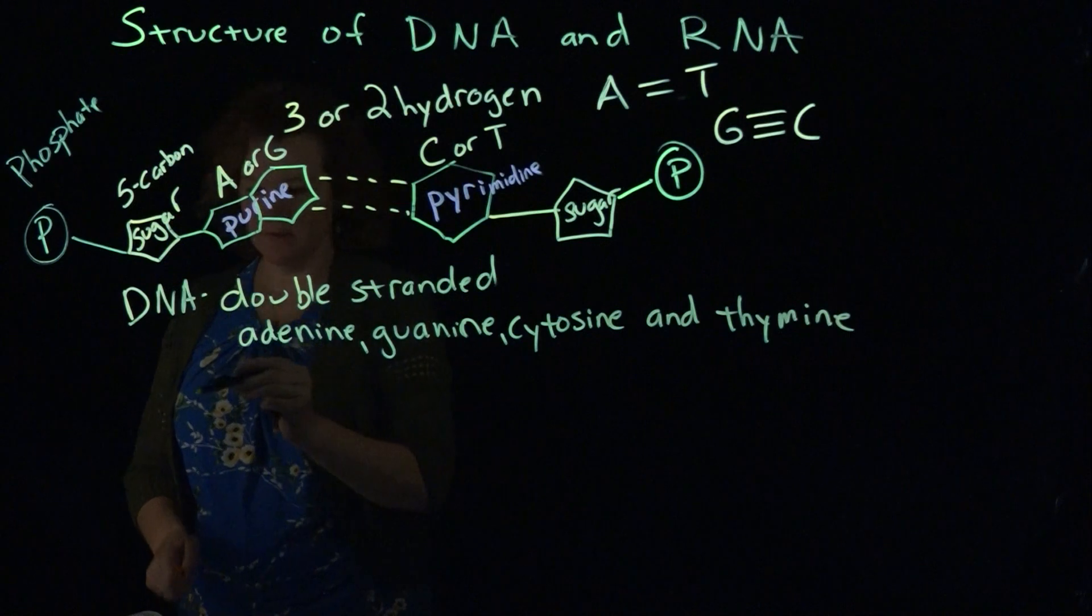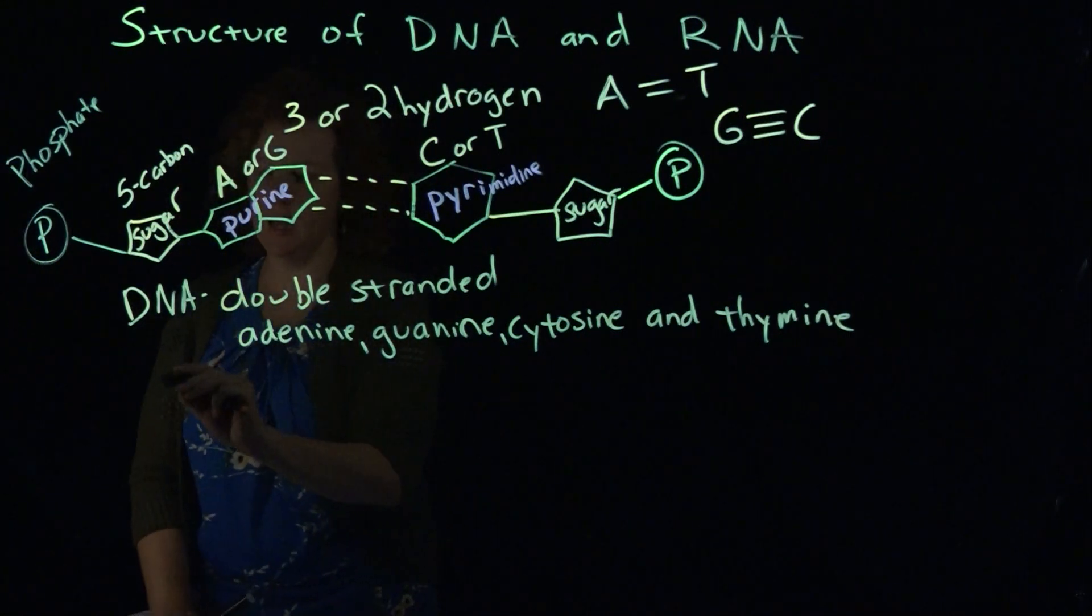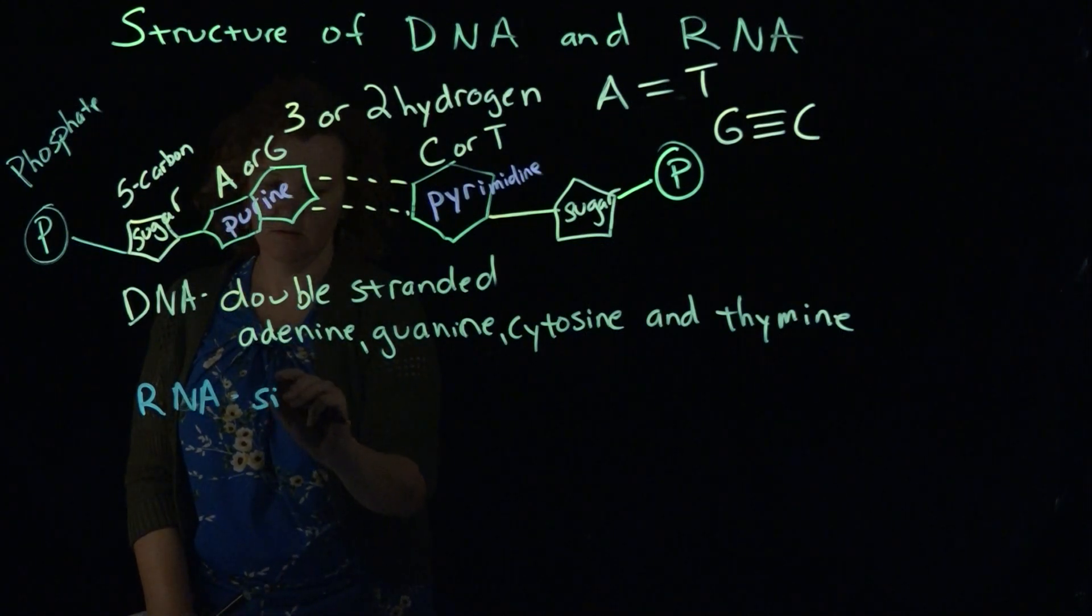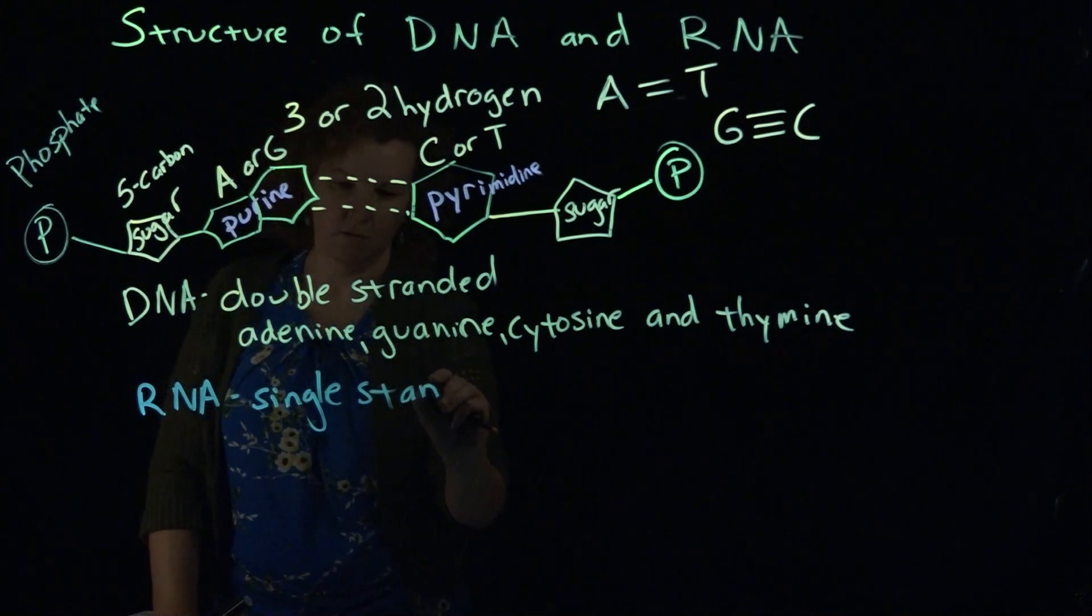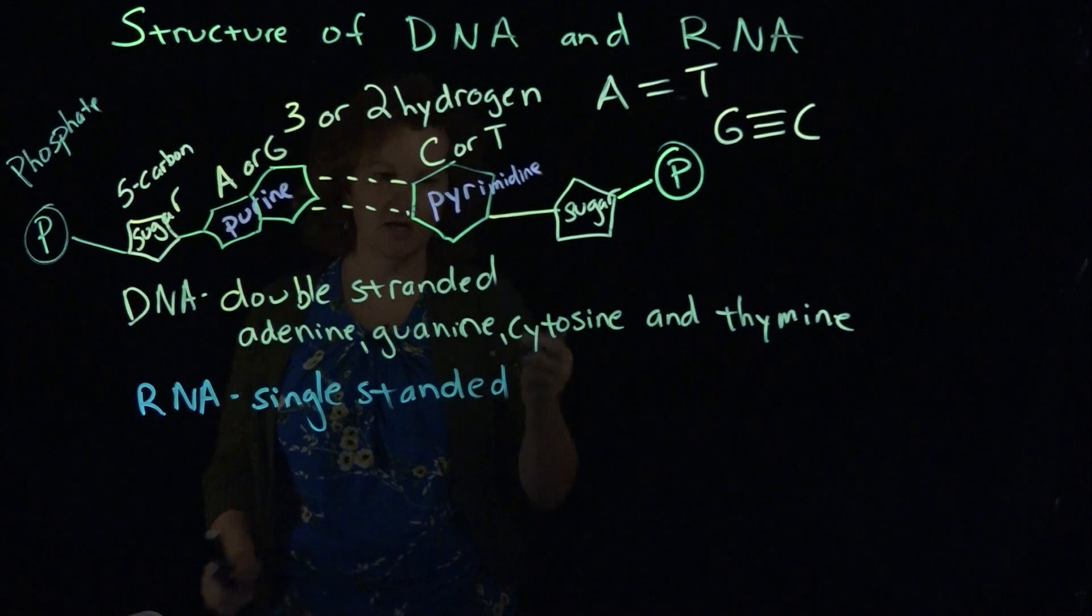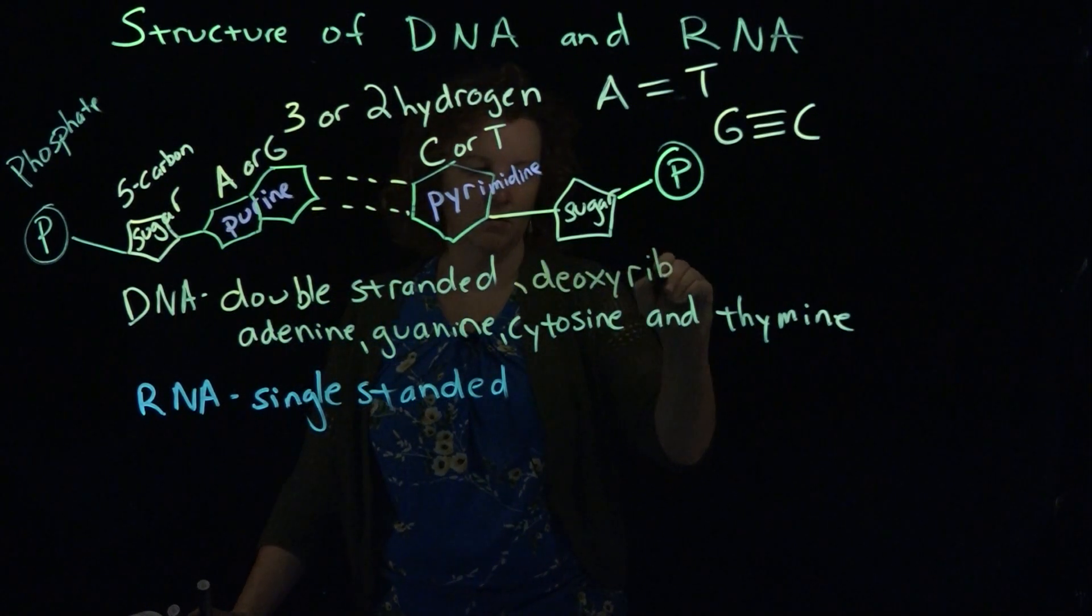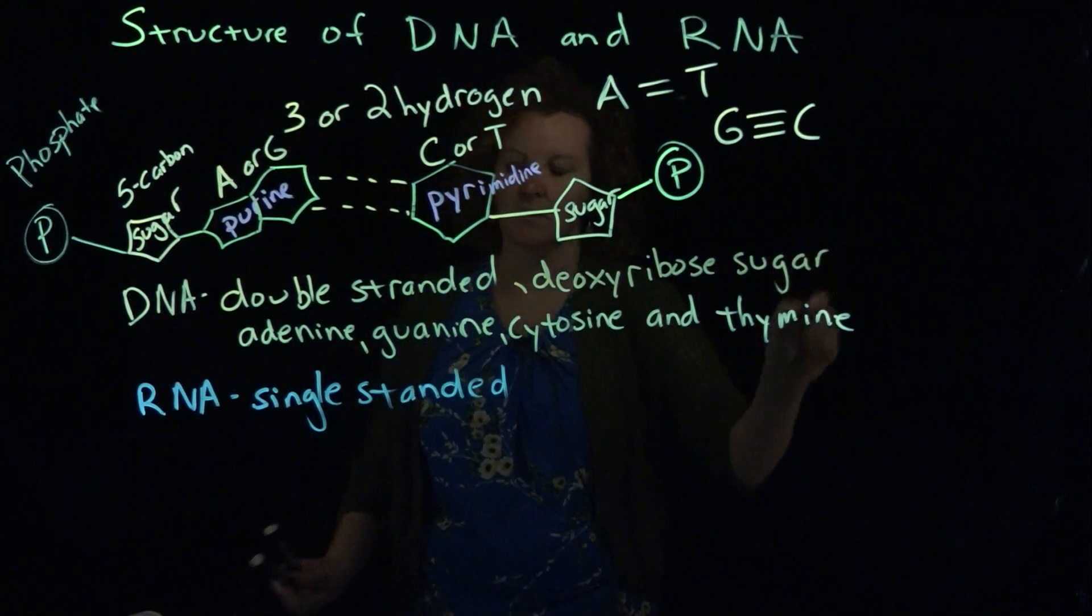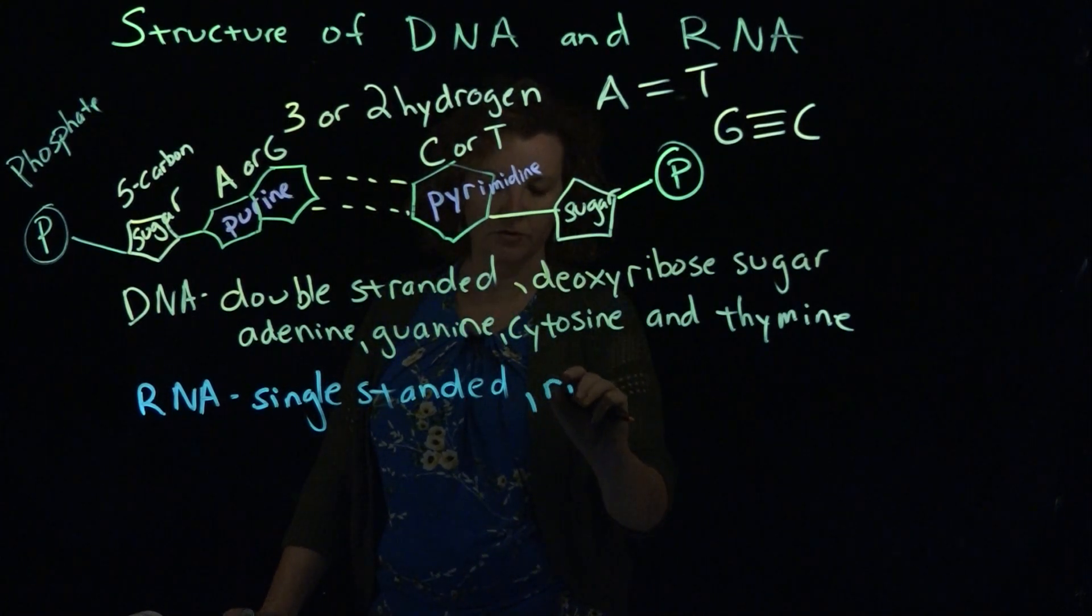RNA is just slightly different. So RNA is single-stranded. Don't forget the sugars are different. In DNA, the sugar is deoxyribose. That's the D part. In RNA, it's a ribose sugar.